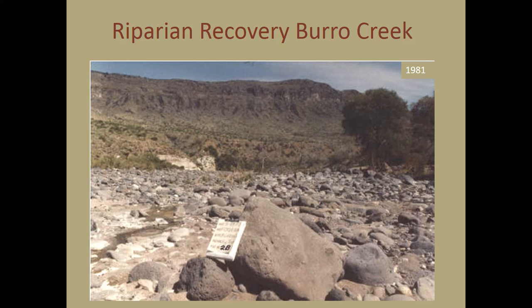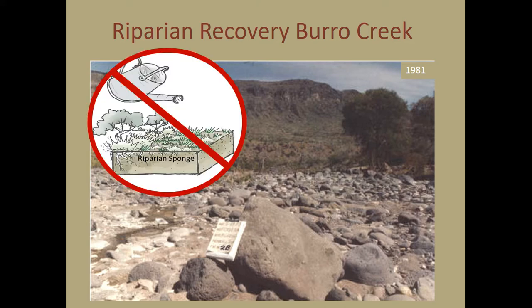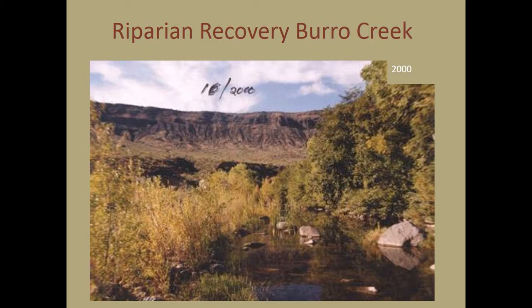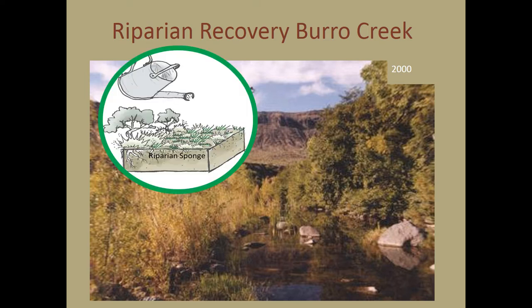Pictured here is a site on Burrow Creek, which lies on BLM land in the Texas mountains of Arizona. The first image was taken in 1981. The creek at this site was still perennial, but flows had reduced to a trickle running between pools. No riparian function was visible from this photo point — water was not being stored in the banks; there was no sponge. Fast forward 19 years to 2000: the site is now clearly functional and storing water — it has a riparian sponge. So what changed? How did this happen?